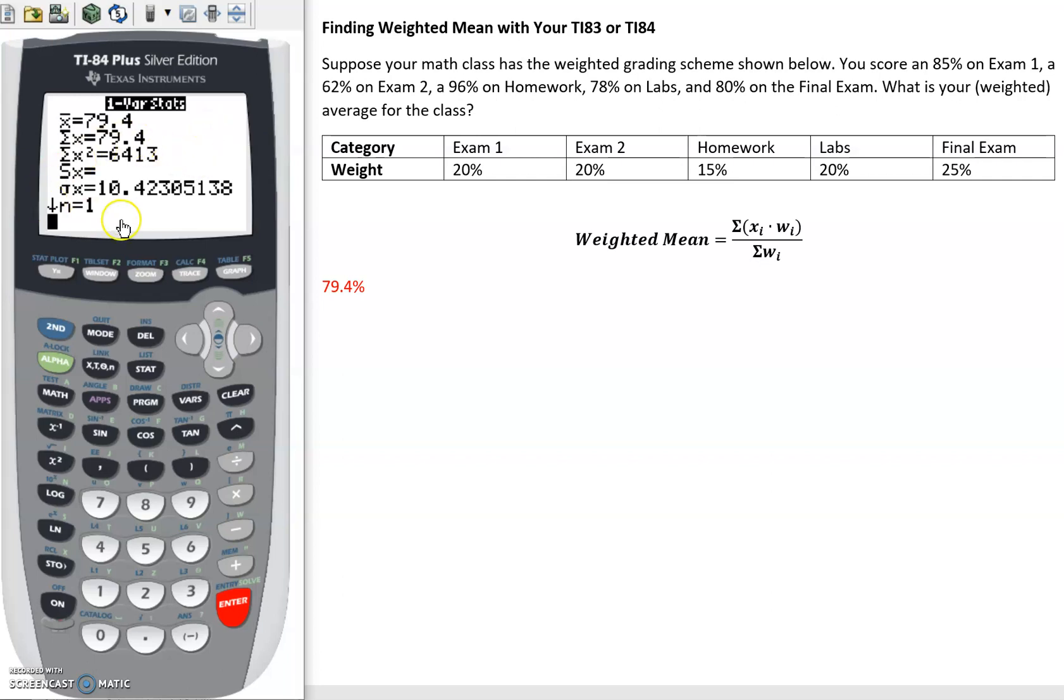What you might notice is different are all of these numbers down here. So when we ran this through the first time, a lot of these were really large numbers because we were using 20 instead of 0.2 or 15 instead of 0.15. But we don't really care about that. So just the first part is what we need for this.